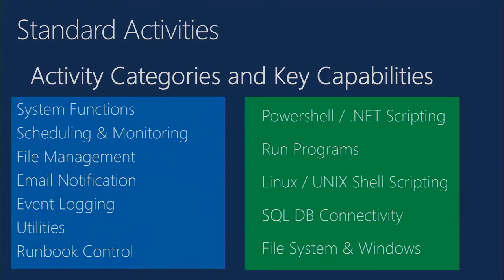There are about 80–85 standard activities that come with Orchestrator by default. These include system functions, Windows services interaction, file and folder management, notification capabilities like sending emails and logging event log entries, querying databases, making calls to web services, probing URLs, and even performing remote SSH shell script functions on Linux, Unix, and network devices. Orchestrator is sometimes called a code-free automation platform, but I like to call it a light-code platform, because with the run .NET script activity you can leverage existing VBScript, JScript, and PowerShell within your runbooks.